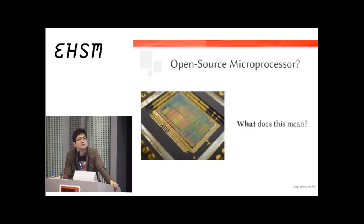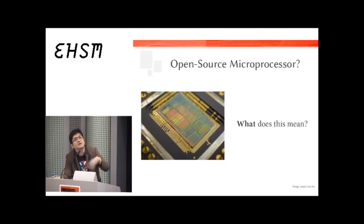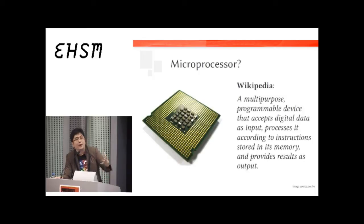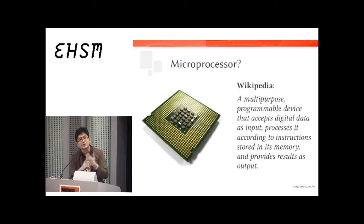A microprocessor is essentially the brain of every modern computing platform — from servers, desktop PCs, laptops, down to smartphones, iPads, iPods, even your microwave oven and air conditioning. They're the basis of all modern computing devices and consumer electronics. The job of a microprocessor is very simple: it takes a bunch of instructions, runs them on input, and spits out output. It doesn't sound very smart — and it actually isn't.